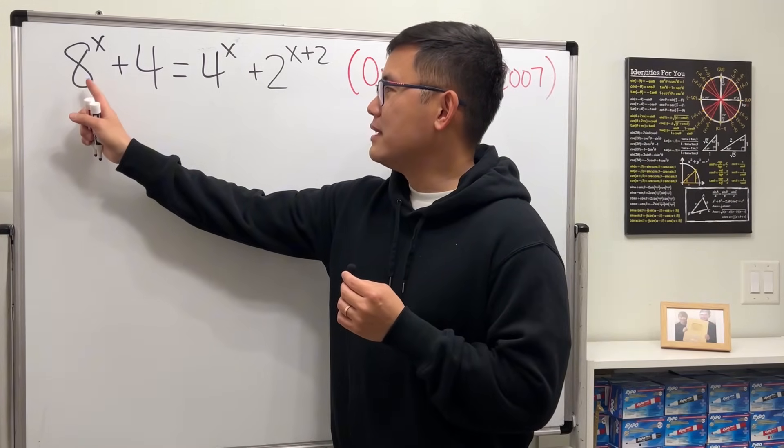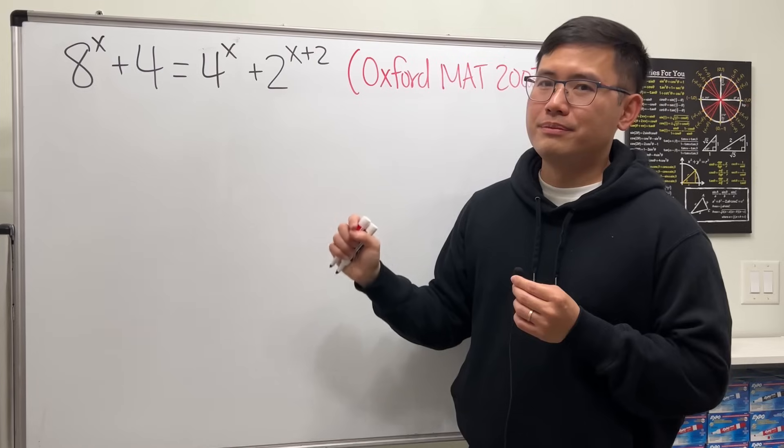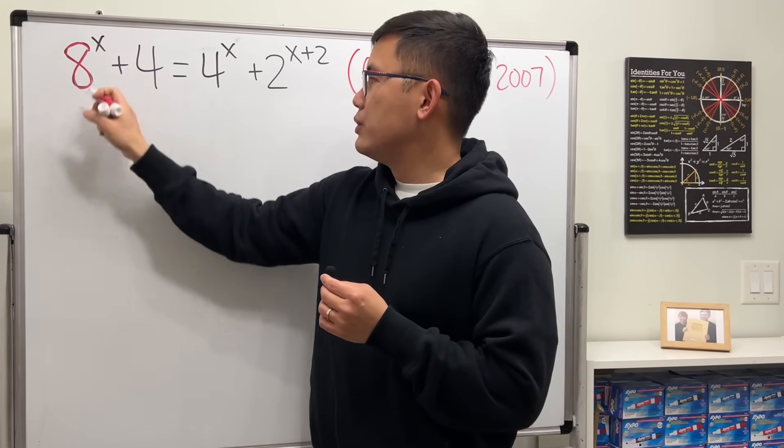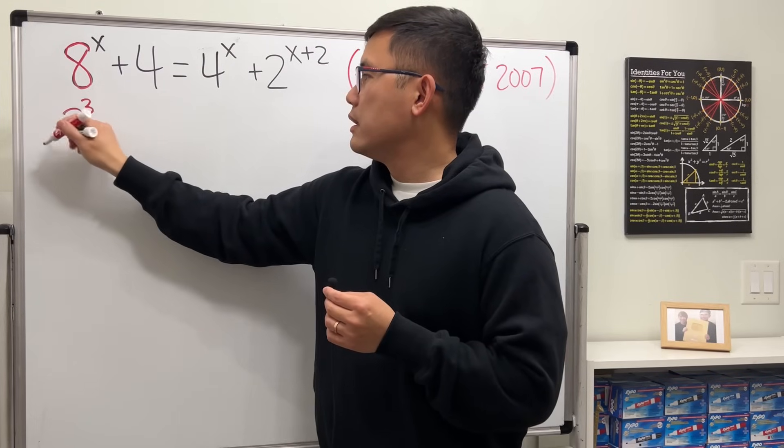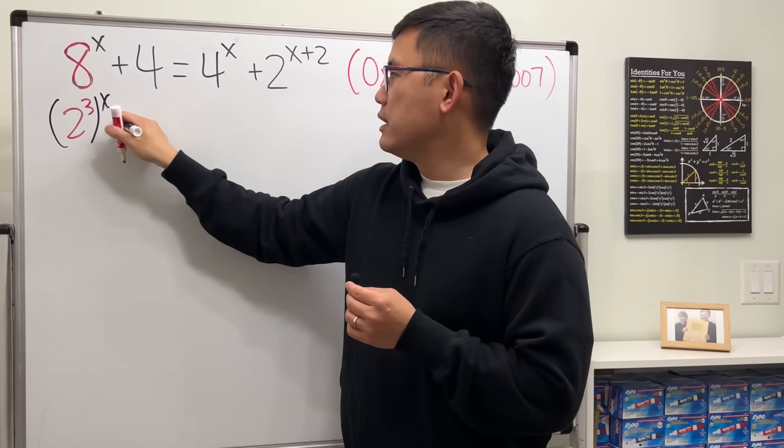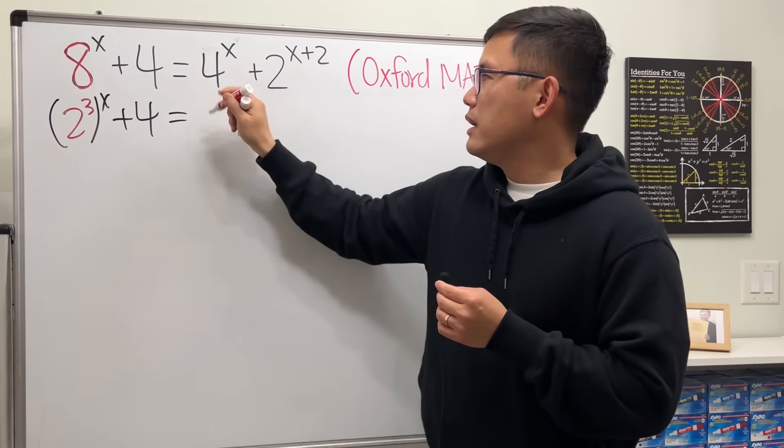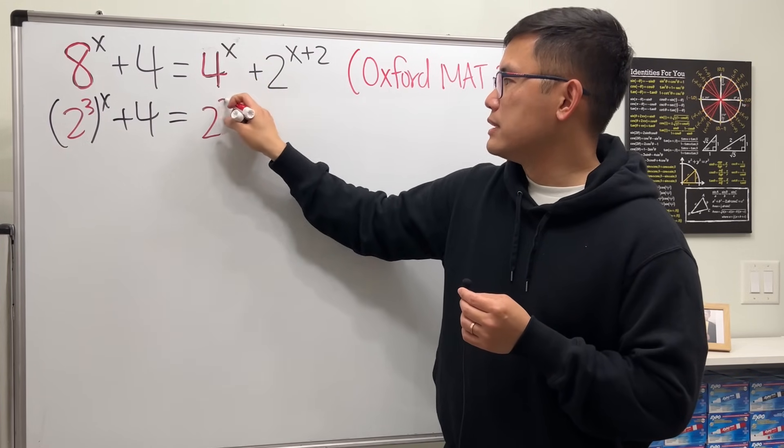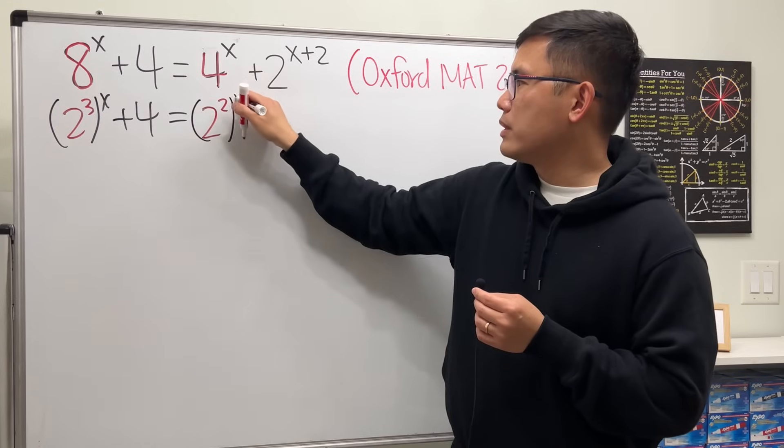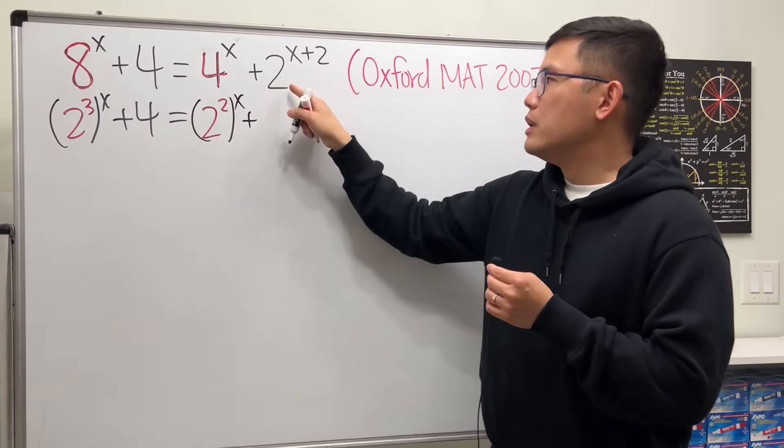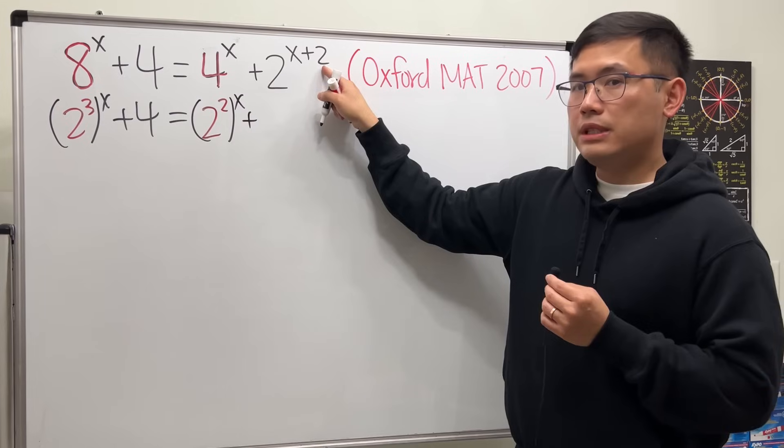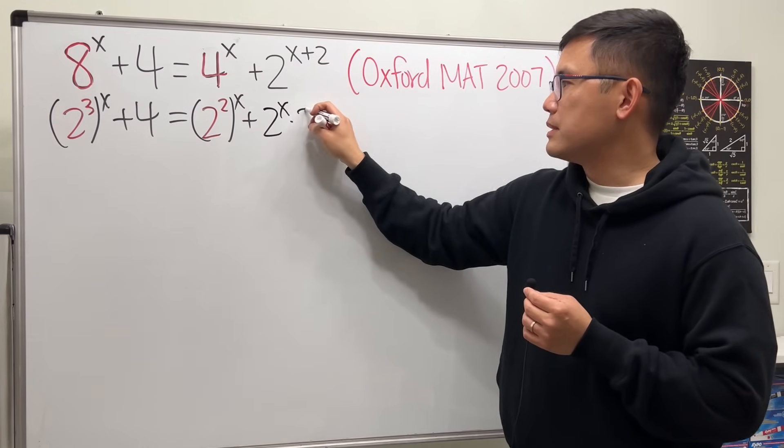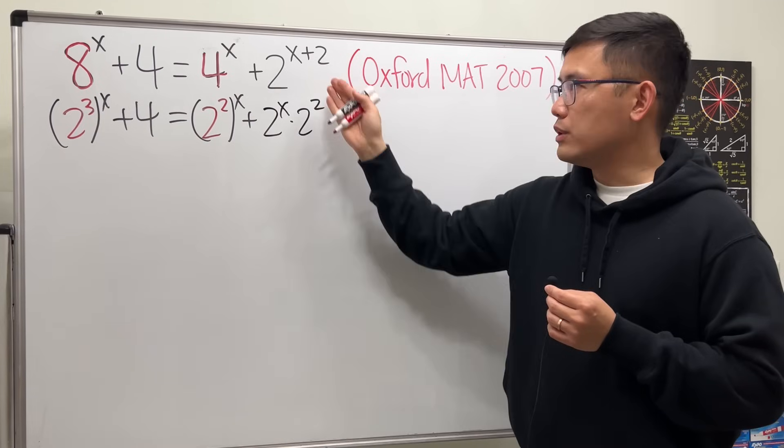Notice we have three different bases, 8, 4, and 2. But it's okay, because we can write the 8 as 2 to the third power, and then raise that to the x power, and then keep the plus 4, and do the same thing with the 4. Write it as 2 to the second, and then the x power. And then for this part, notice we have x plus 2 in the power. We can break it down as 2 to the x times 2 to the 2 by the rule of exponents.